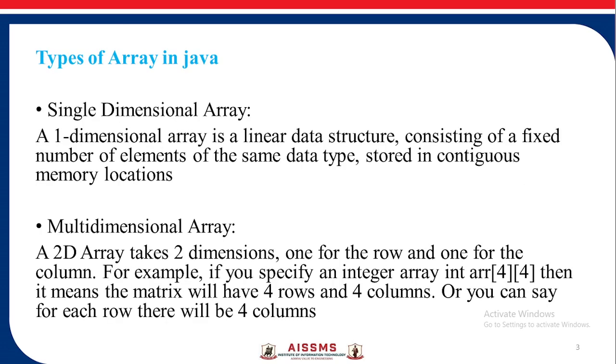Types of array in Java. A one dimensional array, that is single dimensional array, is a linear data structure consisting of a fixed number of elements of the same data type stored in contiguous memory location. Multi dimensional array or two dimensional array takes two dimensions, one for the row and one for the column. For example, if you specify an integer array int ARR 4 4, then it means the matrix will have four rows and four columns, or you can say for each row there will be four columns.